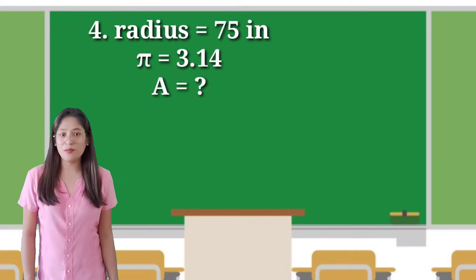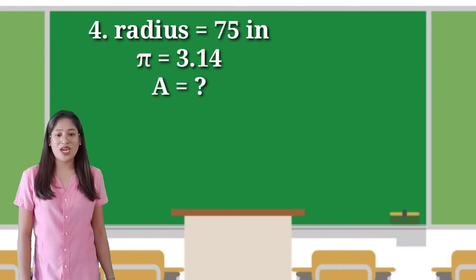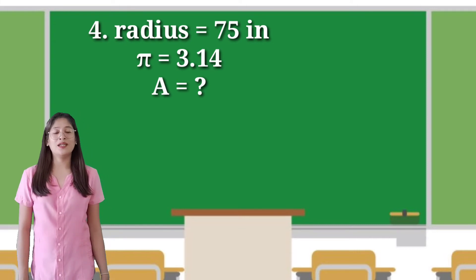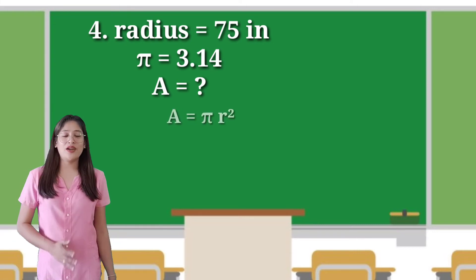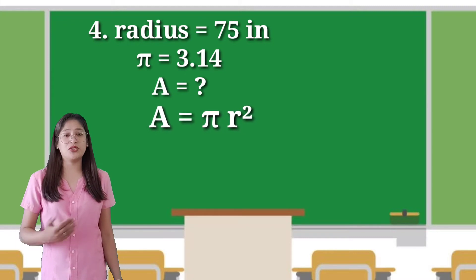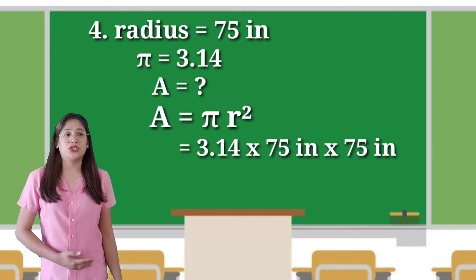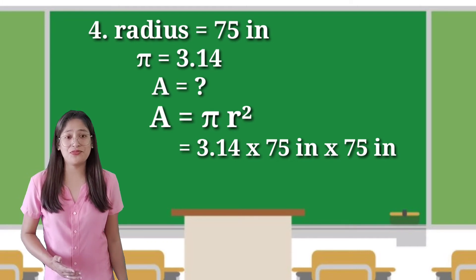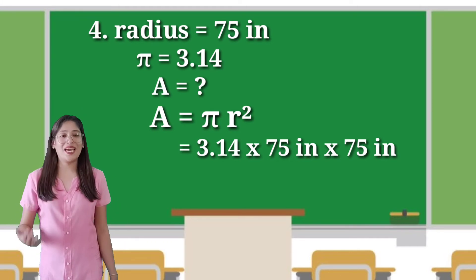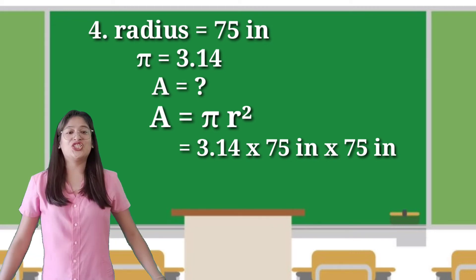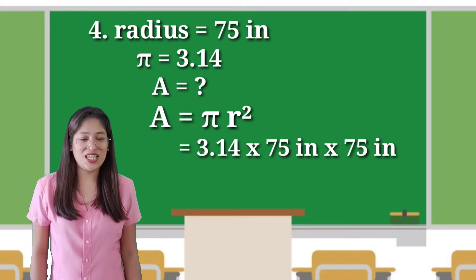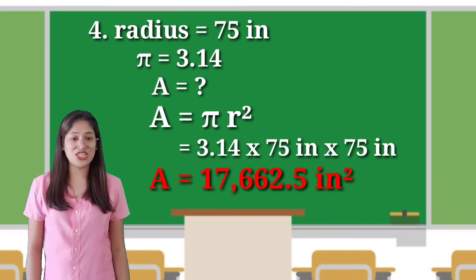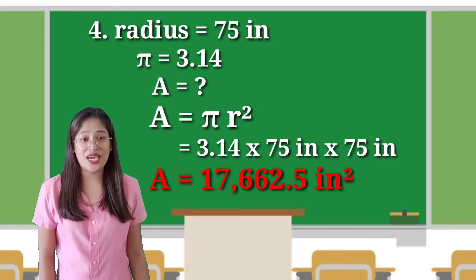In number 4, the given is 75 inches in radius. Using the formula area equals pi r squared, we will substitute it: pi is 3.14, multiplied by 75 inches, and multiplied again by 75. The answer in number 4 is 17,662.5 inches squared.